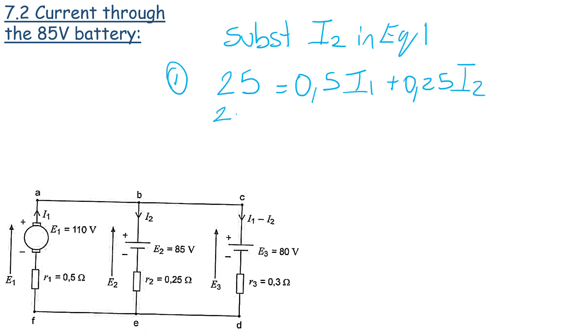So we must substitute I2. 0.5 I1 plus 0.25. Now if we substitute I2 which is 14.285. All right, if you do a little bit of mathematics, a little bit of multiplication, a little bit of division and you simplify using your calculator, we find that I1 is equal to 42.858 amps.